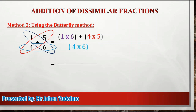And now, pwede na natin i-simplify ang ating mga operations. So 1 times 6, that's equal to 6, plus 4 times 5, that's equal to 20. Then sa denominator, 4 times 6, that's equal to 24. So simplify: 20 plus 6, that's equal to 26. Then copy the denominator, which is 24.